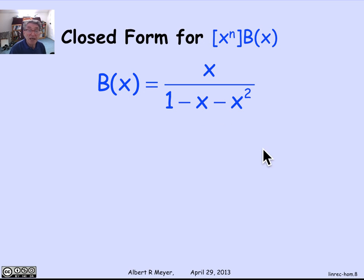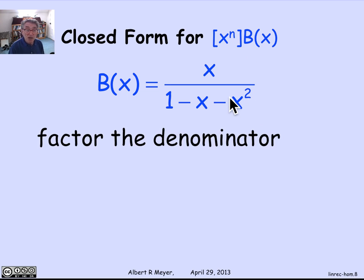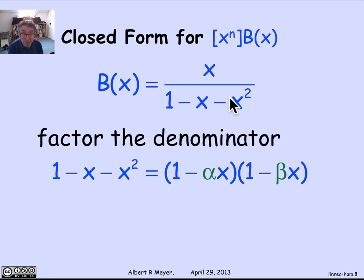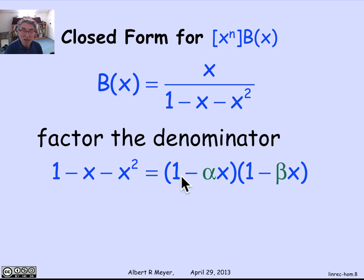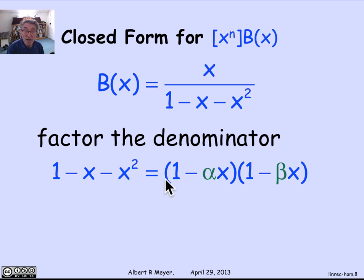Let's proceed to find a closed form for the coefficient of x to the n in b of x. According to the method of partial fractions, the first thing we do is factor the denominator. We're going to factor it into factors of the form 1 minus alpha x times 1 minus beta x. We can do this because the constant term here is 1; otherwise we might need a constant in front. So we factor the denominator as 1 minus alpha x times 1 minus beta x, and the question is: what are alpha and beta?